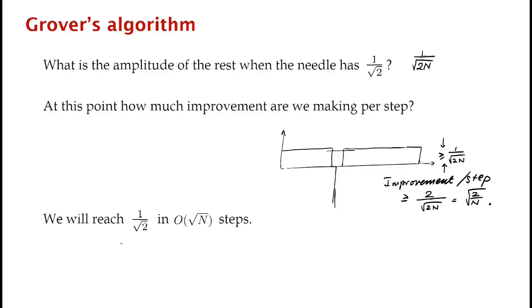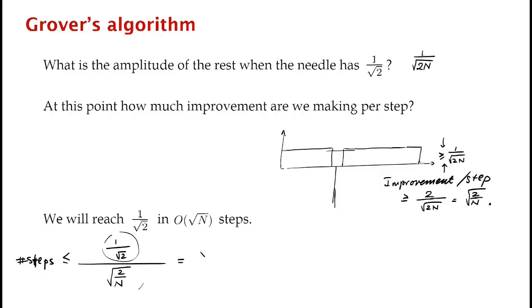To reach amplitude 1 over square root 2, we need the total improvement divided by improvement per step. We need to improve by 1 over square root 2, and each step gives at least square root 2 over N improvement. So the number of steps is at most square root of N over 2. That's the analysis of Grover's algorithm. How do we actually implement these steps? We'll see that in the next video.